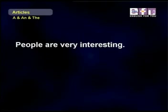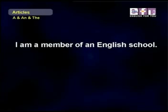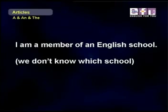He belongs to a large family. We don't know which family, so we use A because it's not specific. She is a member of the school chess club. This is a special group because there is probably only one school chess club, so we use the specific article THE. People are very interesting — we're talking about all people, so we don't use an article. I am a member of an English school. We don't know which school, so we use AN — not specific.